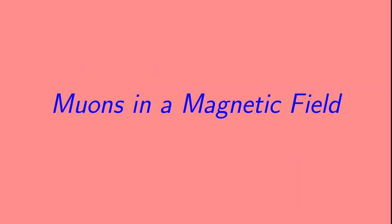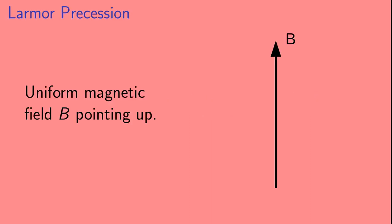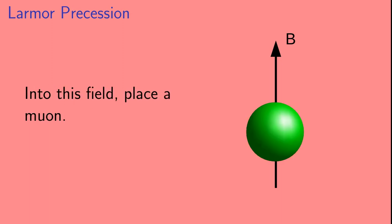Let's get started by talking about what happens to muons in a magnetic field. Let's say we have a uniform magnetic field, B, pointing up. Into this field, we place an anti-muon — a mu plus — as that's what the experiment uses.